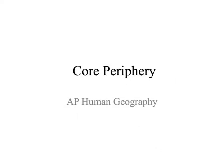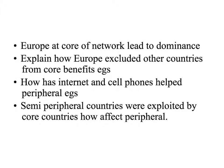This is a video on the core-periphery model for the AP Human Geography unit. Europe was at the core of a network, and it led to dominance. The questions are: explain how Europe excluded other countries from core benefits and give some examples, how has the internet and cell phones helped peripheral countries, and how did semi-peripheral countries being exploited by core countries affect peripheral countries?